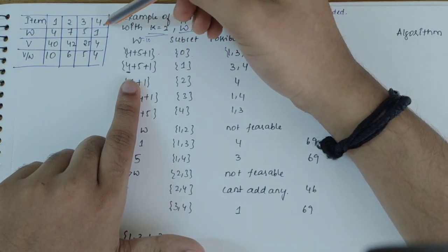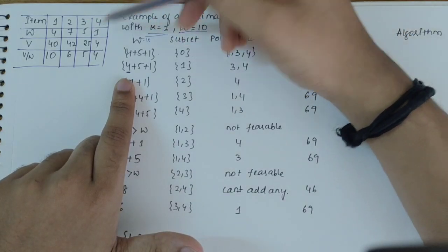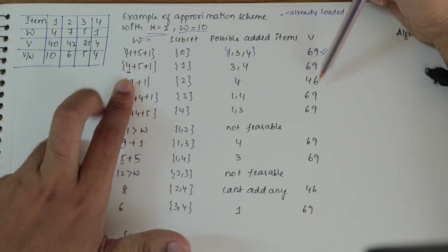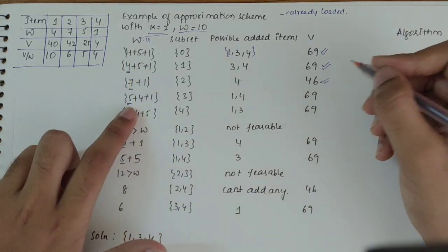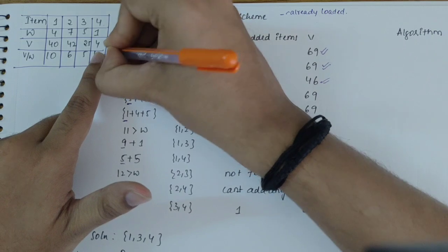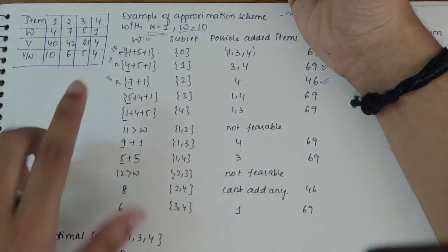Next, I have 7. The sack capacity is 10. Can I add 4? No, it will exceed 10. Can I add 5? It will exceed 10. I can add 1. So 7, 1 I can add. When I add 1, I am including the 4th item. 42 plus 4, I get 46. Next, assuming that 5 is constant, this total weight is 10, here also total weight is 10, here total weight is 8.